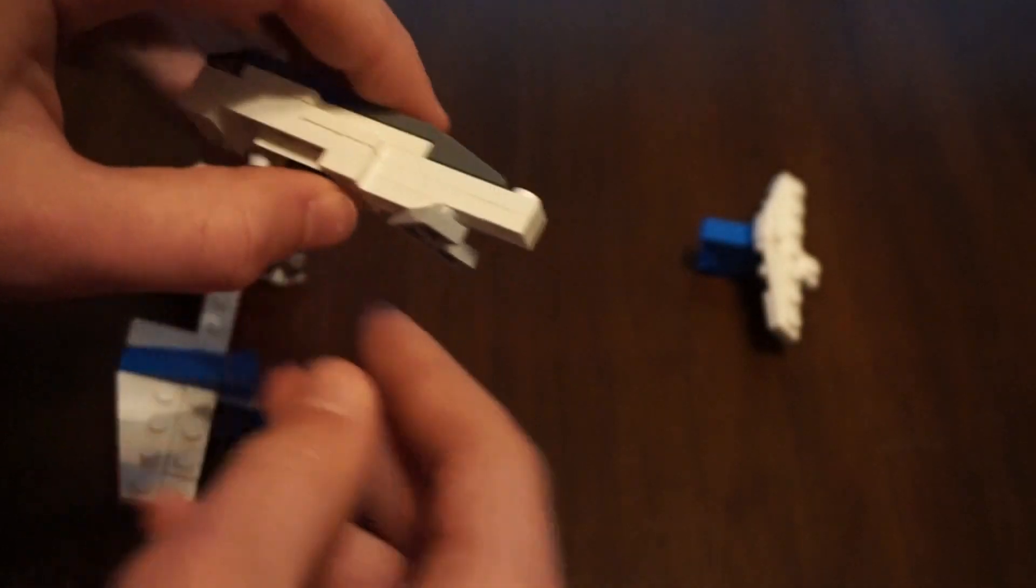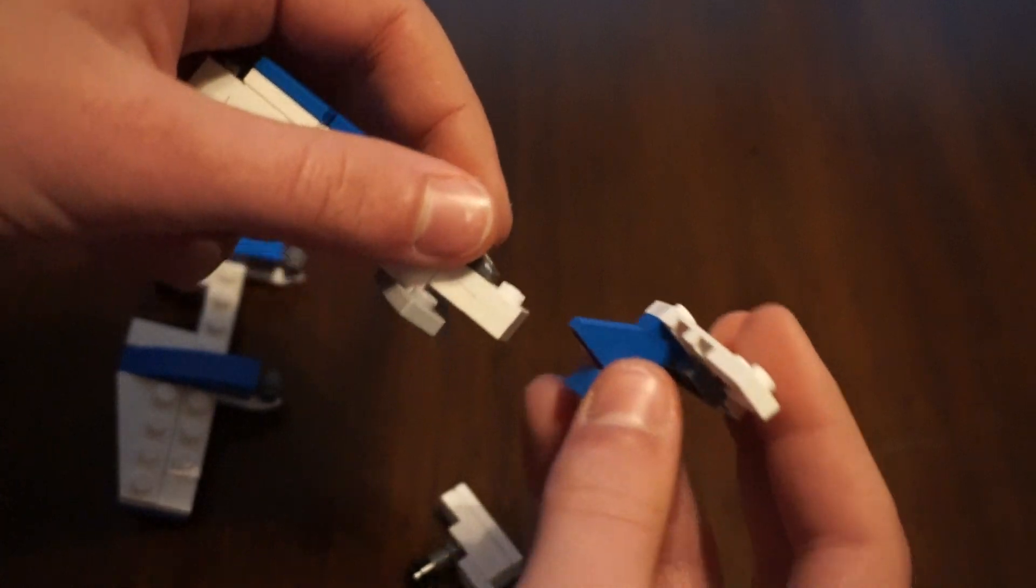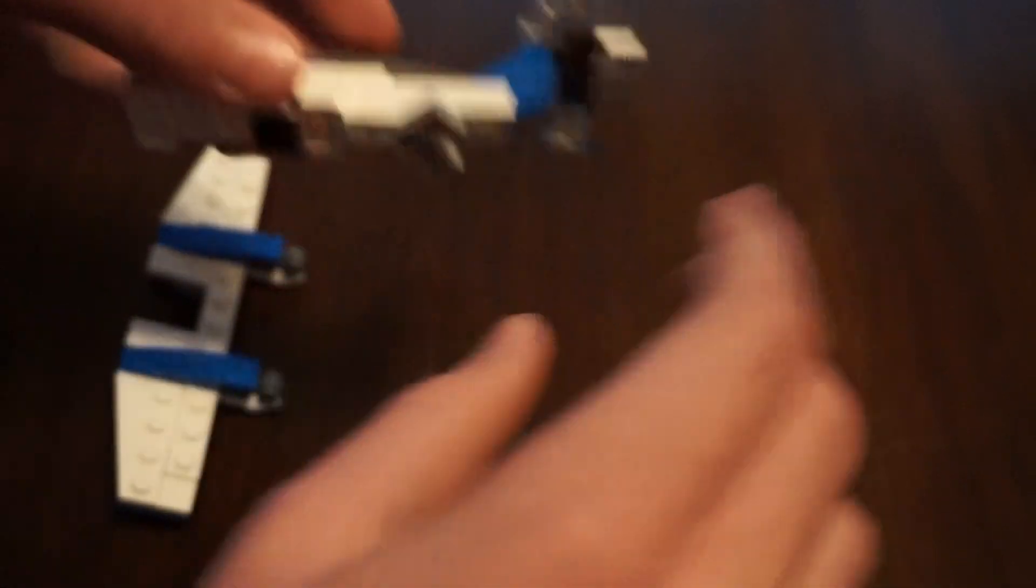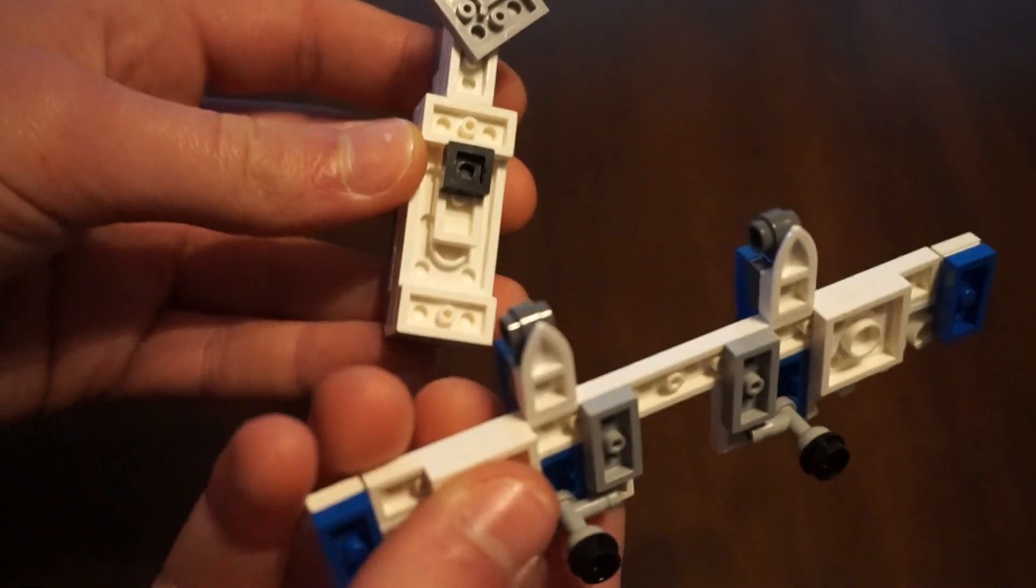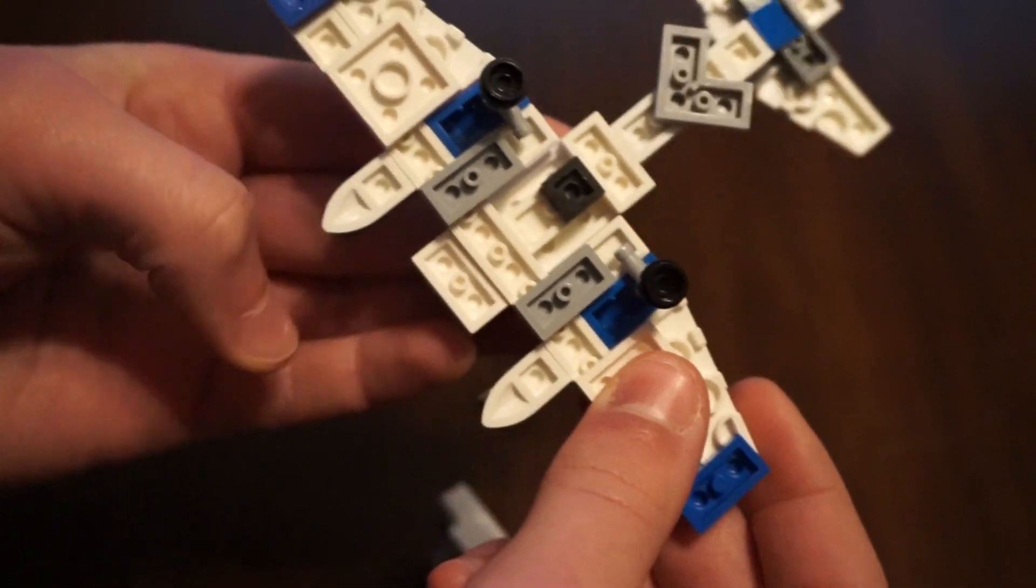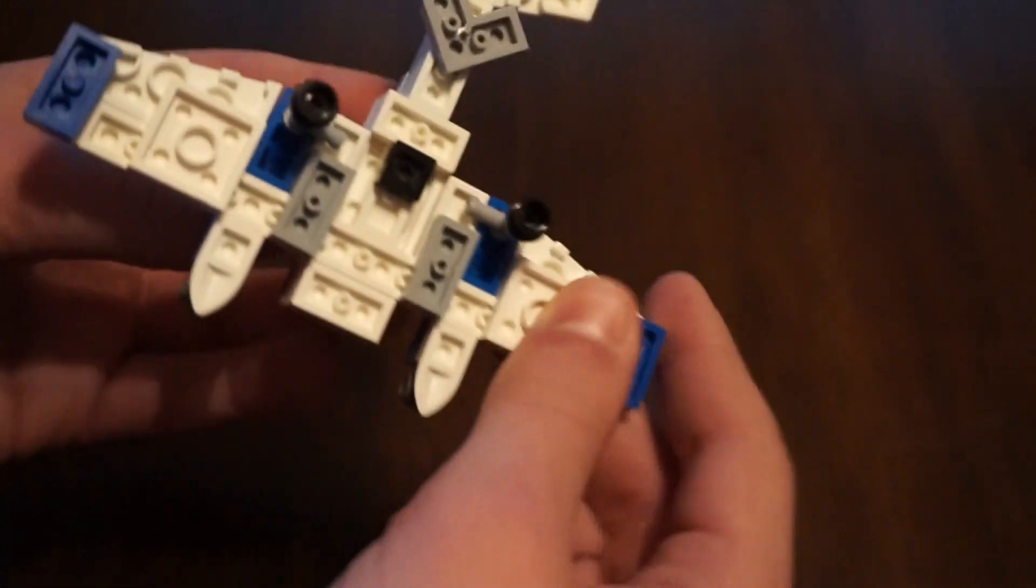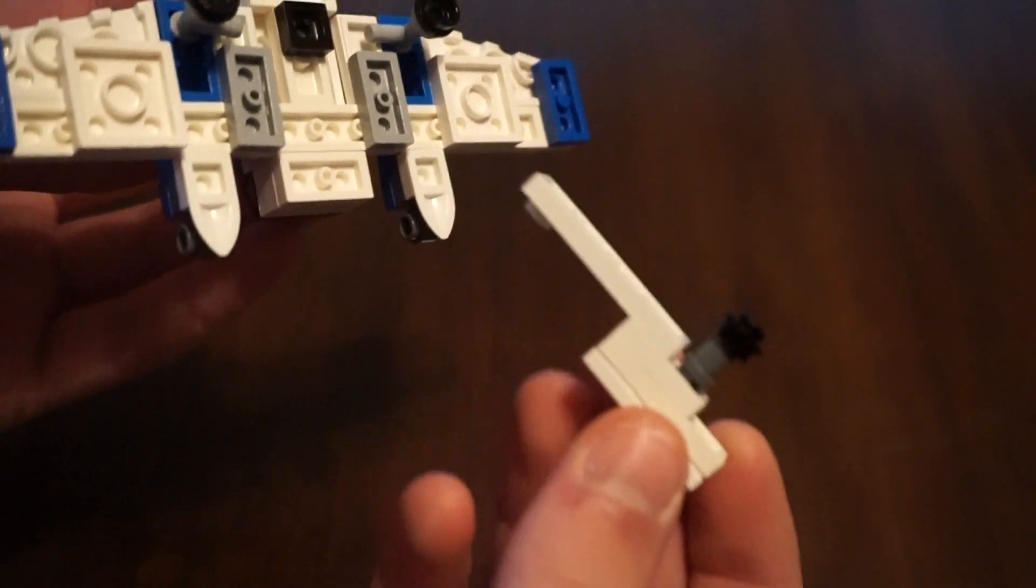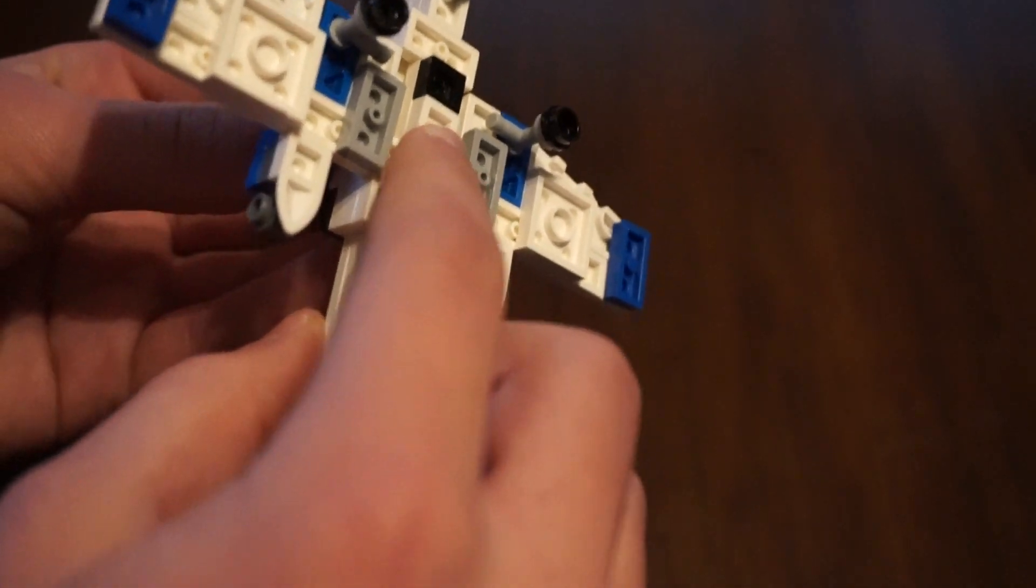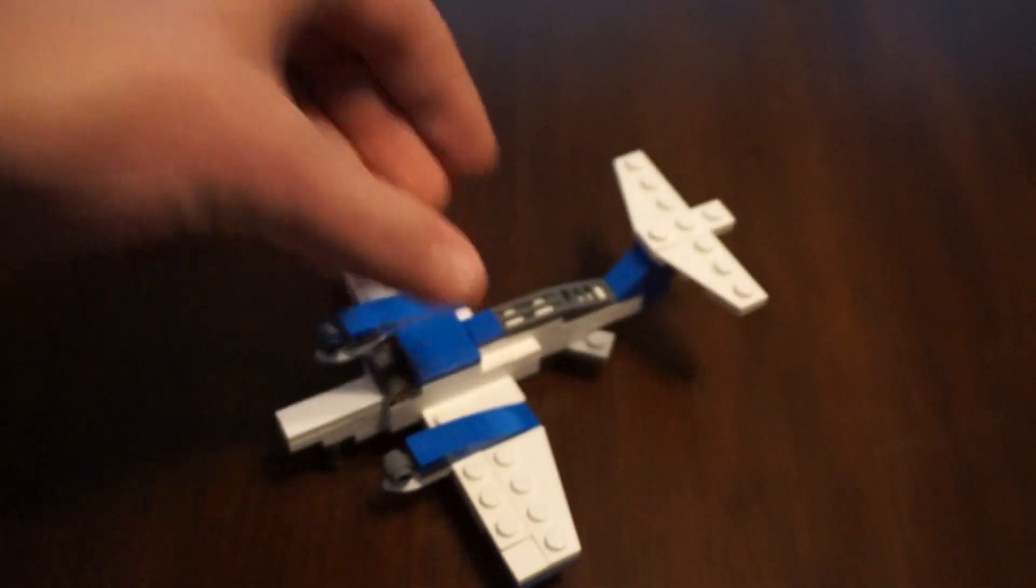So now we will take the fuselage of our body, and put the tail on the end of it, and the wing will fit right in there, and this is the tricky part where we take this piece, because it's flat there, we can put it right in the middle, just like that.